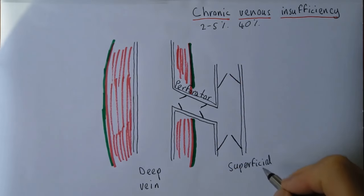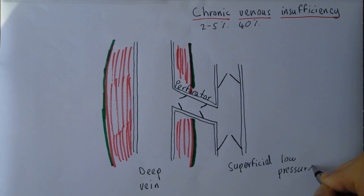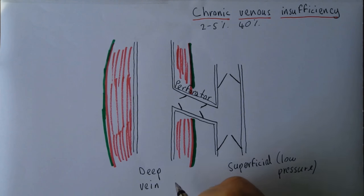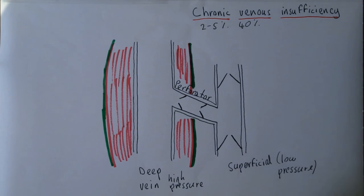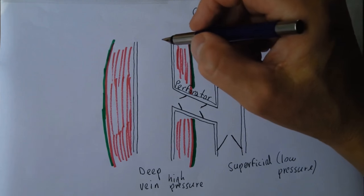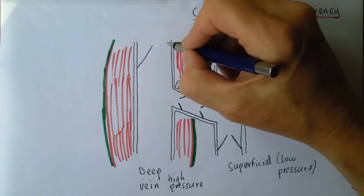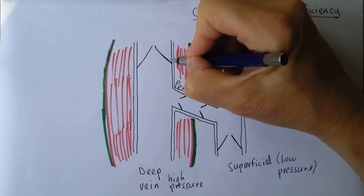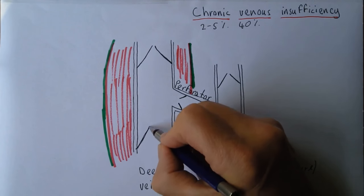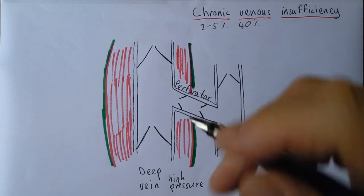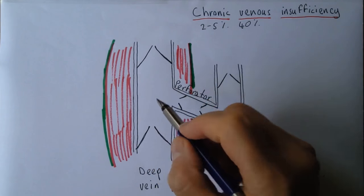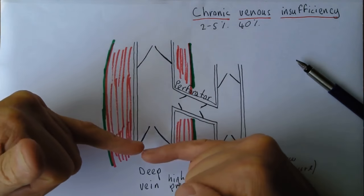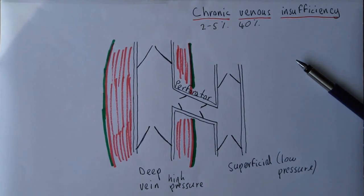The superficial veins are the low-pressure system, whereas the deep veins can be high pressure. There are valves inside the deep veins as well, pointing in the direction from periphery toward center, so blood can flow from here upward, and if there's any back pressure those valves shut, preventing regurgitation. That is the normal physiological situation.